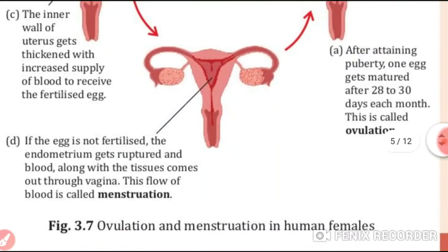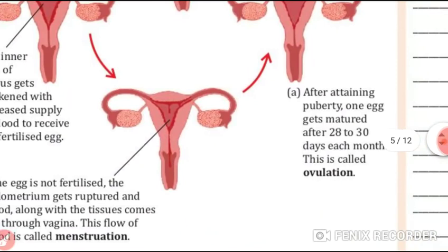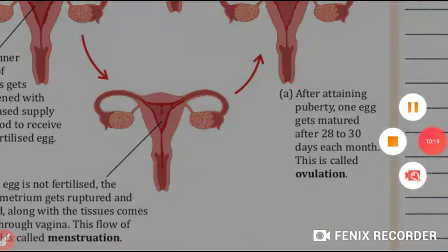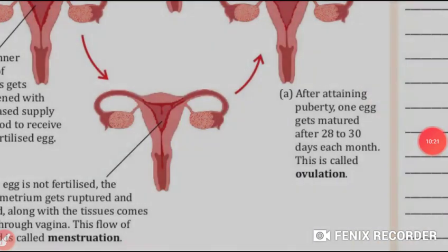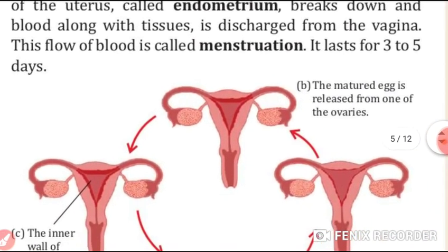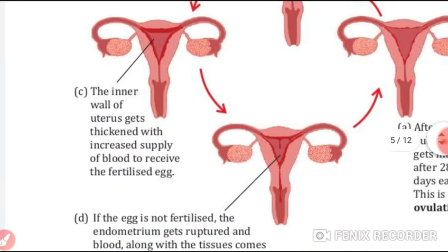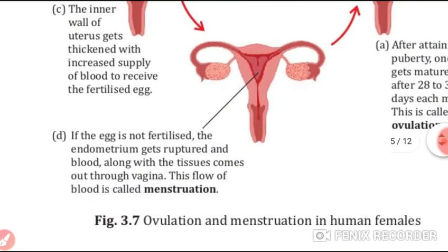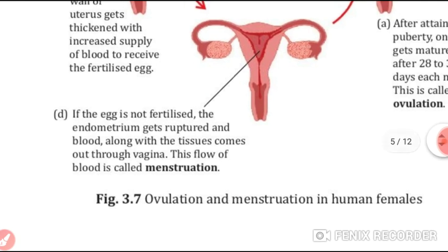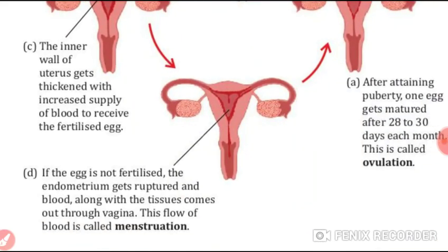Here is the diagram for ovulation and menstruation in human females. After attaining puberty, one egg gets matured after 28 to 30 days each month — that is called ovulation. The matured egg is released from one of the ovaries, then the inner layer of the uterus gets thickened with the supply of blood. If the egg is not fertilized, blood comes out from the vagina — that is called menstruation. For today we will stop here and continue in the next video. Thank you.